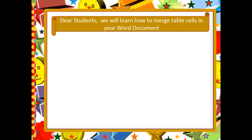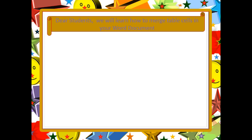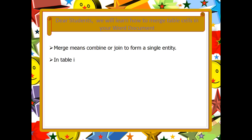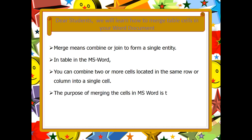Dear Students, we will learn how to merge table cells in your Word document. Merge means combine or join to form a single entity. In a table in MS Word, you can combine 2 or more cells located in the same row or column into a single cell. The purpose of merging cells in MS Word is to create a heading that spans several columns horizontally.